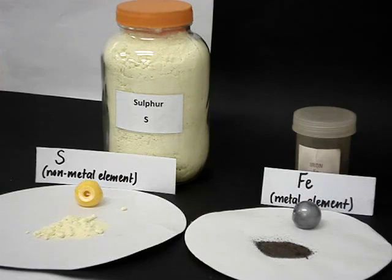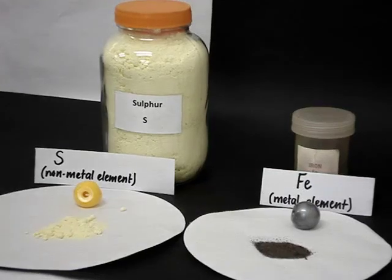And all the iron you see there consists of the same kind of atom, an iron atom. We can make an iron and sulfur mixture by putting some iron with some sulfur.